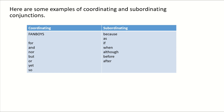For coordinating conjunctions we can use FANBOYS: for, and, nor, but, or, yet, so. For subordinating conjunctions, you may remember using the I SAW A WABUB acronym. Here are just a few of those: because, as, if, when, although, before, and after.